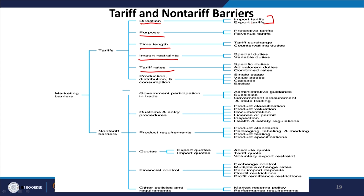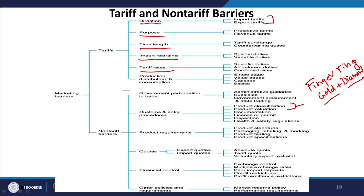Non-tariff barriers are also used by governments to determine the type of trade that will happen. Governments can have customs and entry procedures — for example, product classification. Consider a finger ring that is made of gold and also has a diamond on it. How should this finger ring be treated? Is it classified as made of gold or made of diamond?